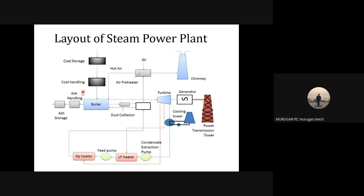The layout of a steam power plant consists of mainly four circuits: the coal and ash circuit, the air and flue gas circuit, the water and steam circuit, and finally the cooling water circuit. These are the four circuits mainly involved in the layout of the steam power plant.